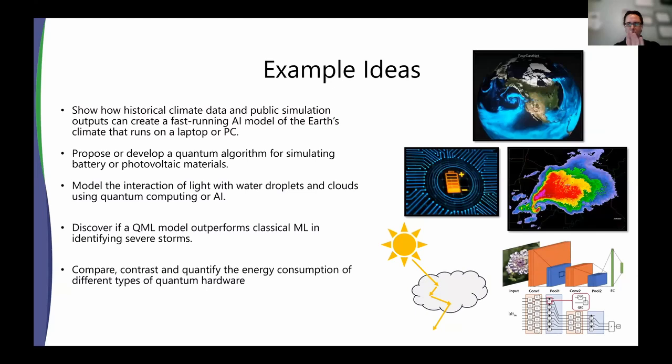So some examples, and this is by no means exhaustive, you can certainly come up with your own or feel free to ask questions about this. One could be show how historical climate data and simulation outputs could create a fast running AI model of the Earth's climate that runs on very limited computing resources, like a laptop or a PC. This is a very hot topic these days. A few of the hardware vendors are even starting to put some of these out right now. Basically, they call it an emulator or a surrogate model of a very large coupled system of equations.